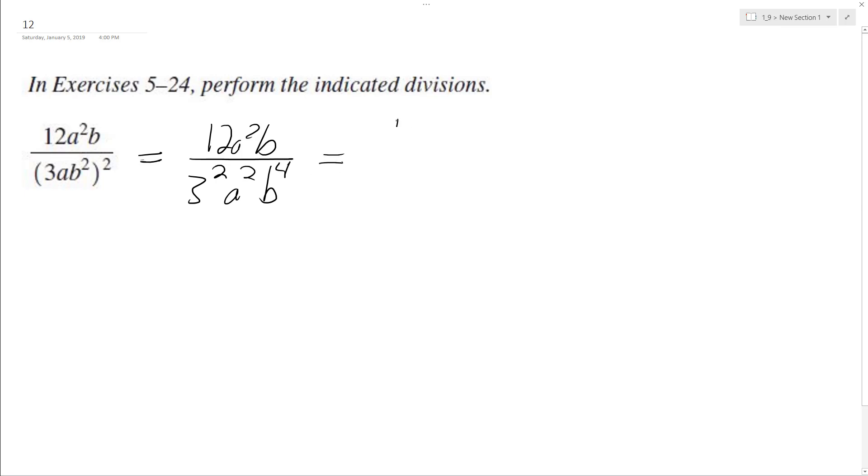So we have 12a squared b over 9a squared b to the fourth. So 3 goes both into 12 and 9, so that reduces into 3 and 4.